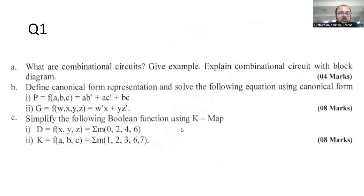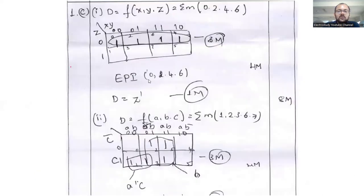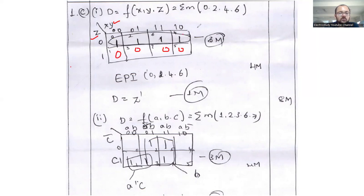Question number 1c: simplify the following boolean function using Karnaugh map. F = f(x, y, z) = Σm(0, 2, 4, 6). It's very simple, not too complicated. This carries eight marks (four plus four). First, decide how many bits are required, mention the inputs and outputs, fill in the table, put zeros in empty spaces, then do the grouping following the grouping rules. The answer will be z-bar.